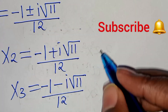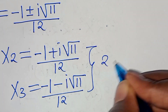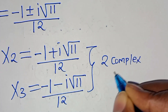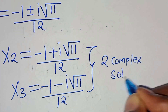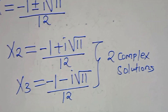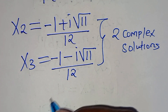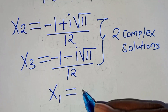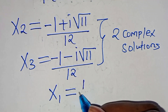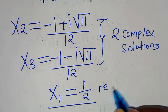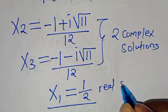So, x₂ and x₃ are two complex solutions for this algebra problem. This implies that we have only one real solution, and this is equal to 1/2. So, we have x₁ which is equal to 1/2 — this is the only real solution here.